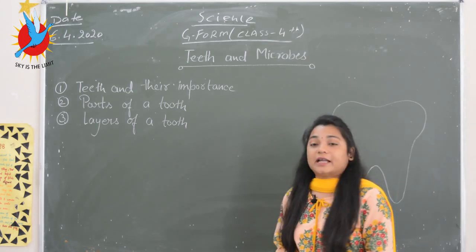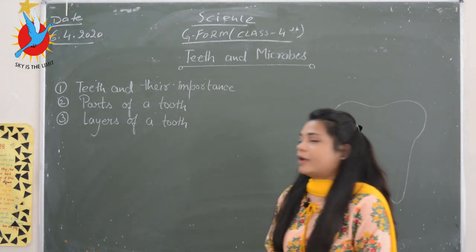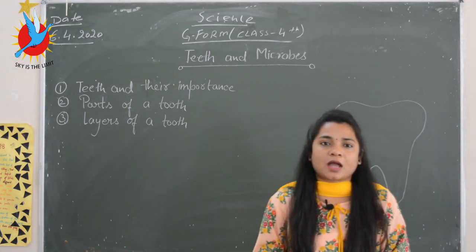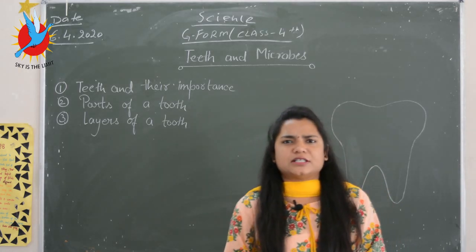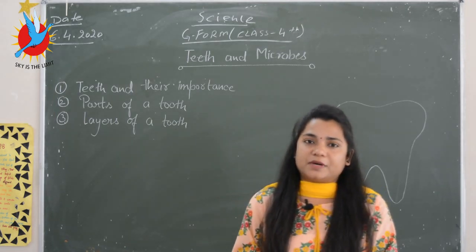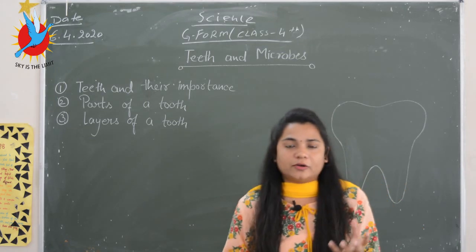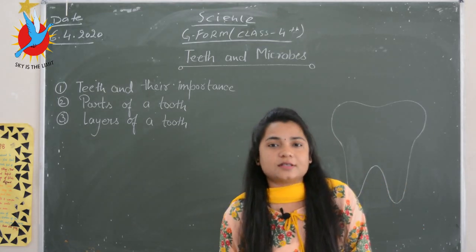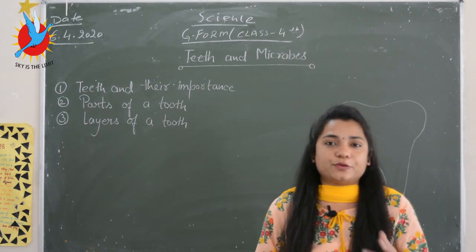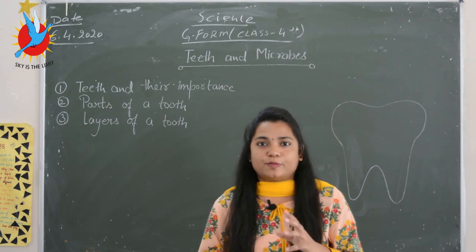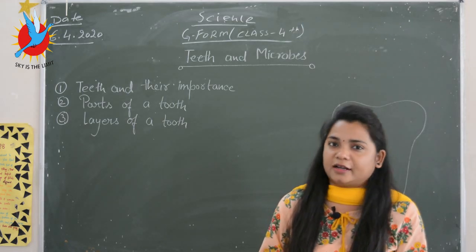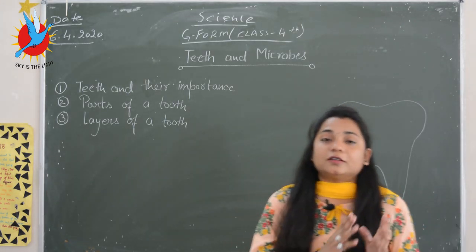Let's start with the first topic: teeth and their importance. You must have seen that younger children and elderly people have to survive on liquid diets such as milk and pulses. Have you ever thought about why? It is because they don't have teeth — they can't bite, tear, chew, or grind anything. Teeth help us in biting, cutting, chewing, and grinding our food.